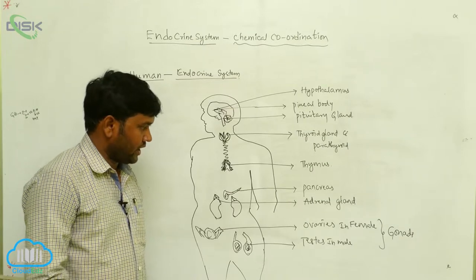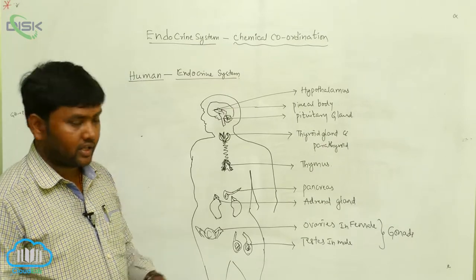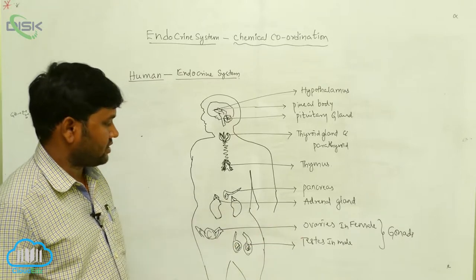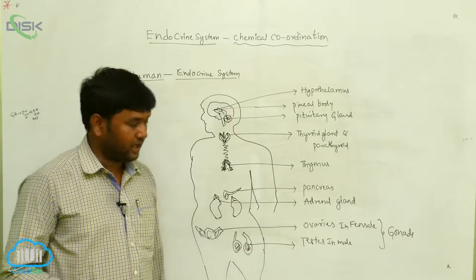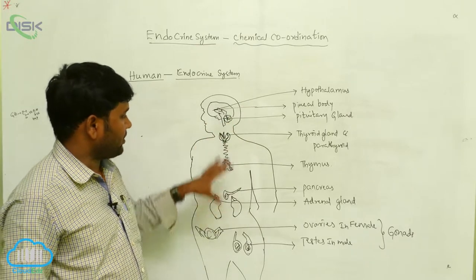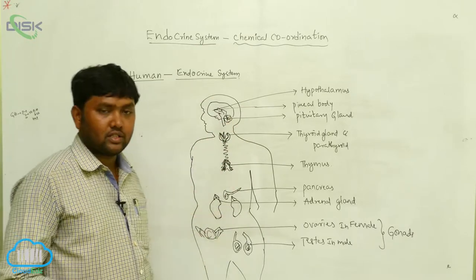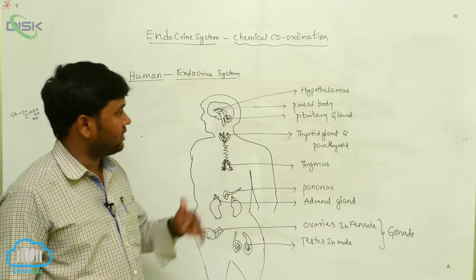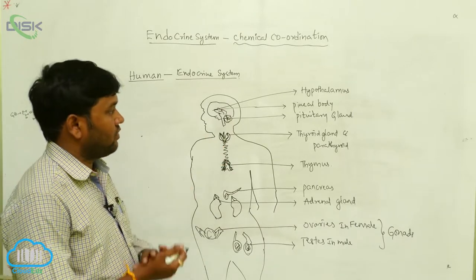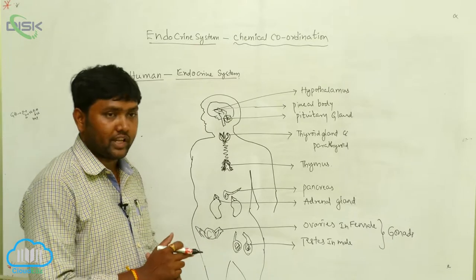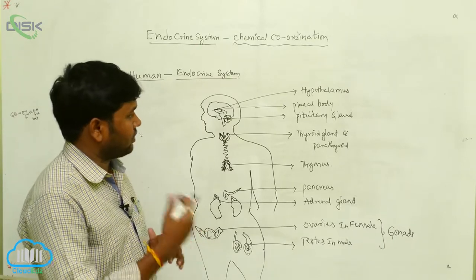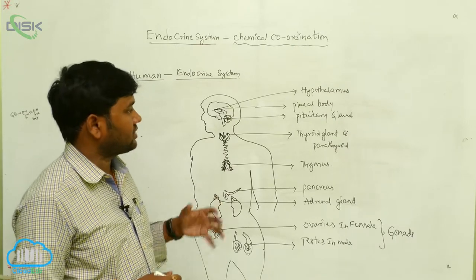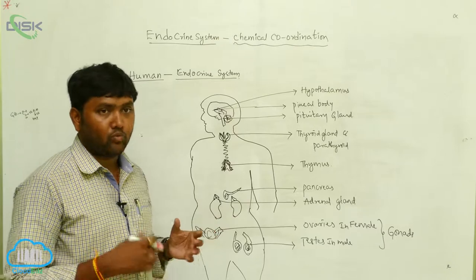Going further down, the gonads — the ovaries are present in females, and the testes are present in males. So the total body consists of different glands and their secretions, which work in different places. These secretions are transported through the blood and work on organs more effectively.